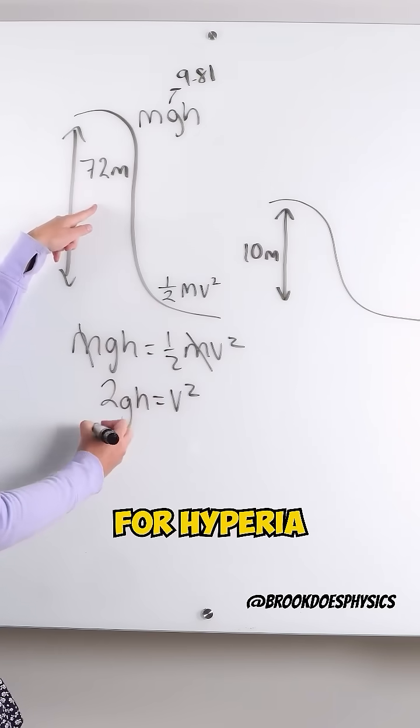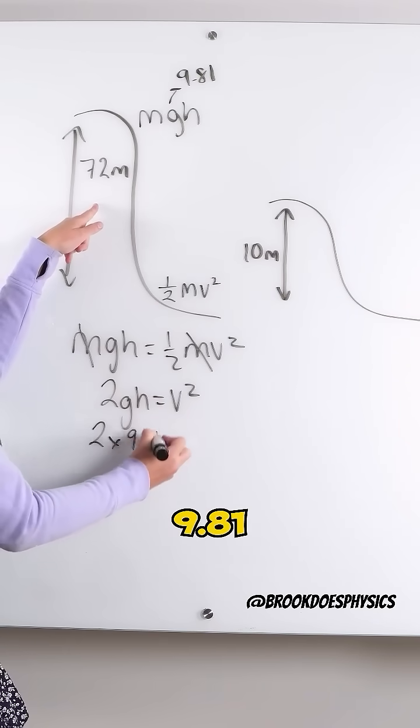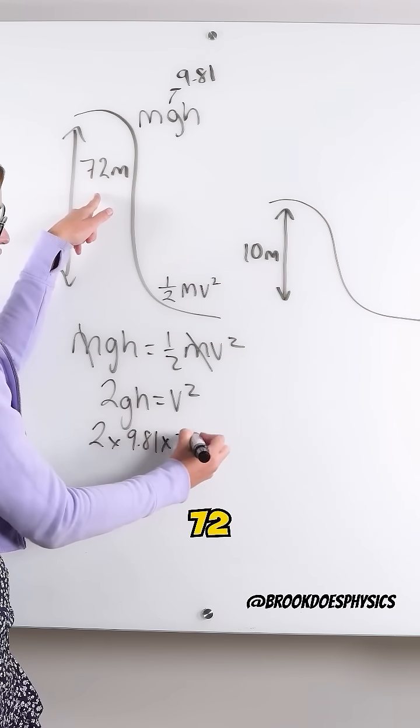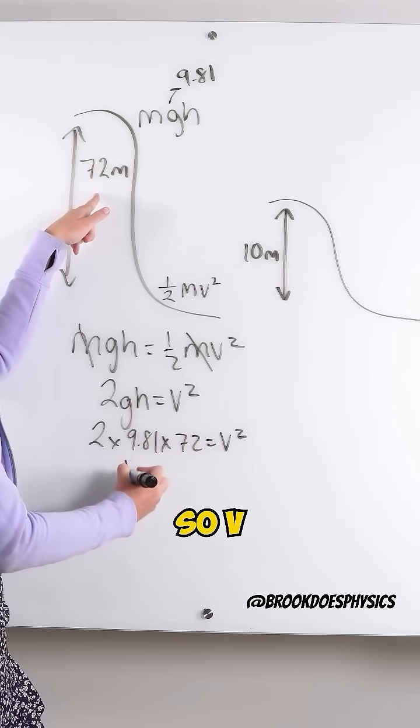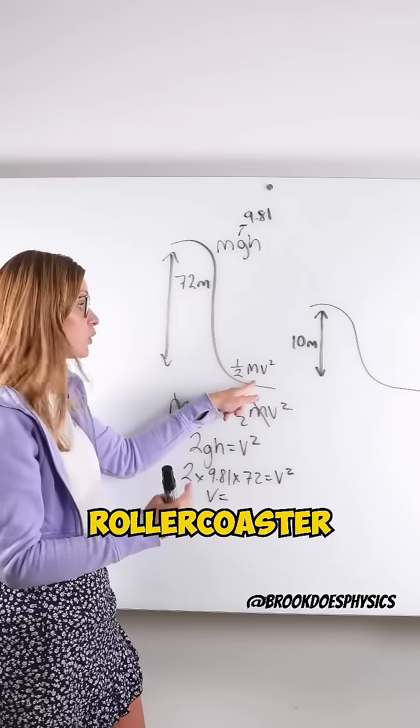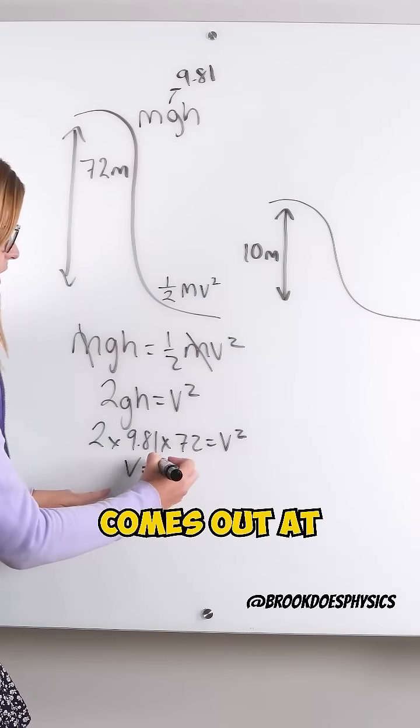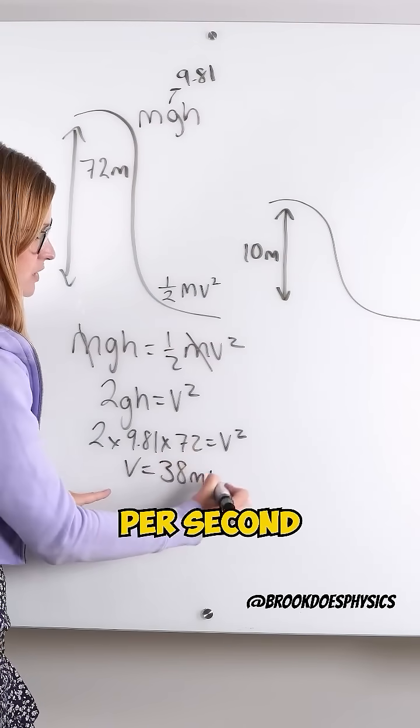I pop in my numbers for Hyperia: 2 times 9.81 times by the height, which is 72, equals V squared. So V, the speed of this roller coaster, or its maximum speed at the bottom here, comes out at 38 meters per second.